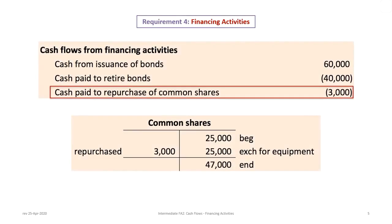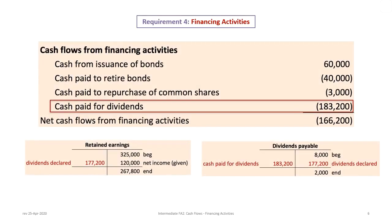Next is the common shares account. We have a $25,000 beginning balance and a $47,000 ending balance. We're told the company issued common shares in exchange for equipment — a non-cash transaction recorded as a debit to equipment and credit to common shares for $25,000. To make the T-account balance (25,000 + 25,000 - 47,000 = 3,000), there must be $3,000 in shares repurchased. Since the shares were repurchased for cash, we record cash paid to repurchase common shares of $3,000.